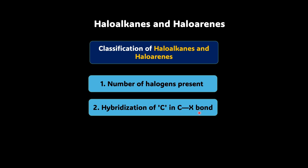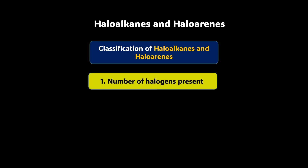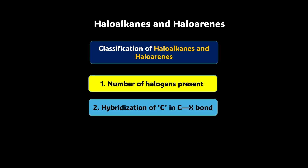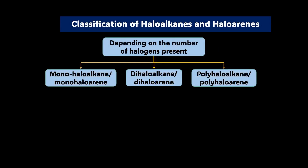Let's explore both of them one by one. Let's begin with the first one — the classification based on the number of halogens present. This classification is quite simple. Depending on the number of halogens present, if there is just one halogen present on an alkane, we will call it mono-haloalkane, and if one halogen is present on a benzene ring, we will call it mono-haloarene.